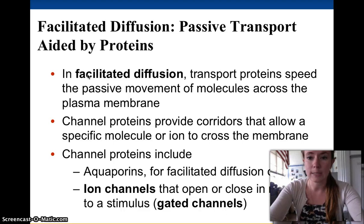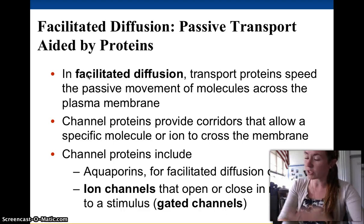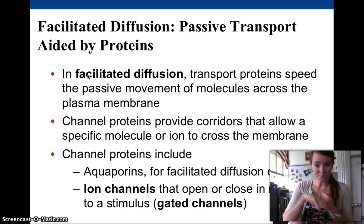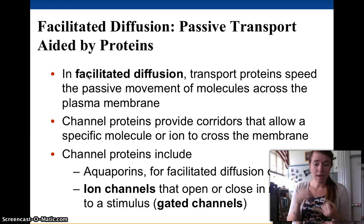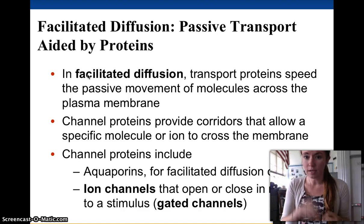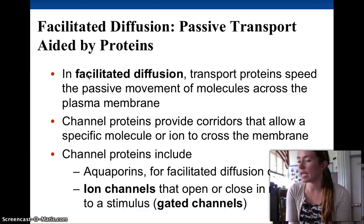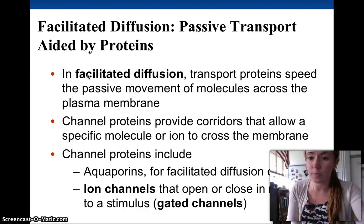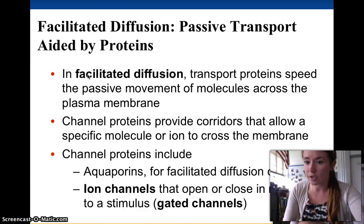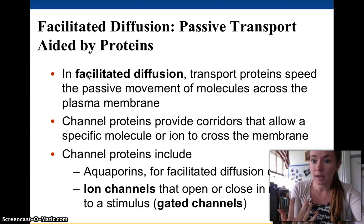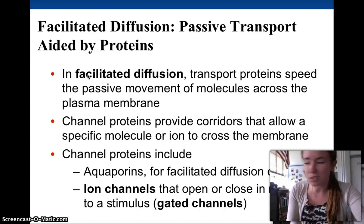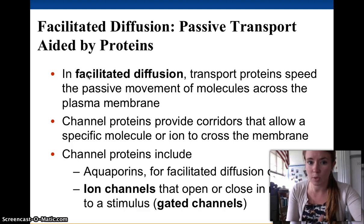In facilitated diffusion, molecules are still moving down their concentration gradient from high concentration to low concentration. But they can't get across the membrane — for whatever reason. Maybe they're charged or polar, so they can't get through the hydrophobic tails, or they're too big. Like a sugar molecule is just too big to fit between the phospholipids. So they need the help of a transport protein.